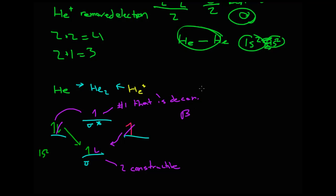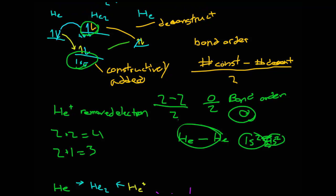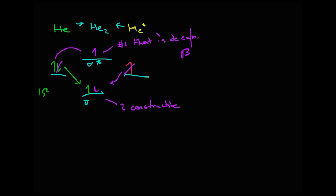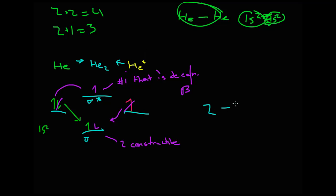When we plug this into bond order, remember bond order again is the number of constructively added orbitals minus the number of deconstructively added orbitals, divide that whole thing by two. We just get two, which are the constructively added ones, minus we only have one this time. Remember before we had two, but since we're missing one, we're only minusing one, and you divide that by two. Here we have 2 minus 1 is 1, so we're just one half. The bond order of He₂⁺ is just going to be one half.